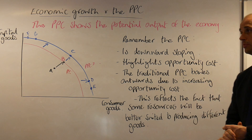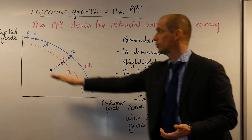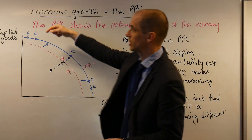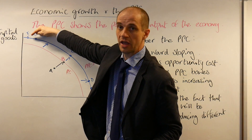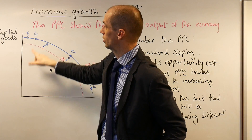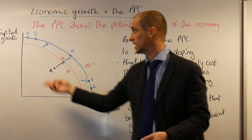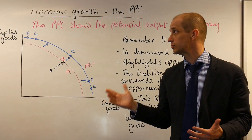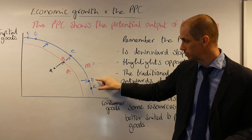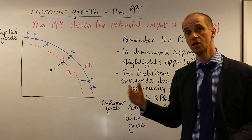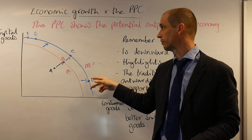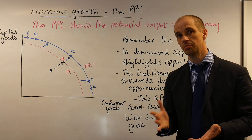The traditional PPC bows outwards, and this is due to increasing opportunity cost. For instance, starting at point F and moving to point G, the loss of capital goods for the increase in consumer goods is quite small. However, moving from point D to point E, the vertical distance — the level of capital goods that need to be foregone — is much, much larger.